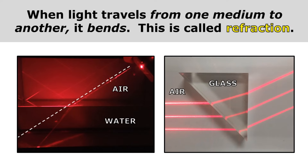When light travels from one medium to another, it bends, and this bending of light is called refraction. In our picture on the left, you can see a laser going from one medium to another — from air, the first medium, into water, the second medium. And when that happens, it bends. You can clearly see that as the light goes from the air to the water, it's bending. That is called refraction.